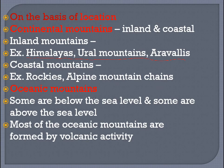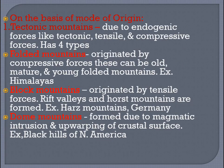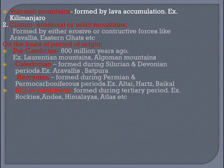Oceanic mountains are found in the oceans — some are below the sea level and some are above. Most of these oceanic mountains are formed by volcanic activity. On the basis of mode of origin, they can be classified into tectonic mountains and circum-erosional or relict mountains.